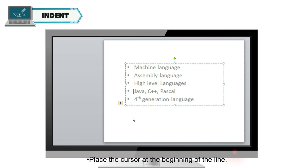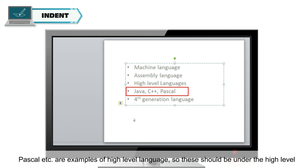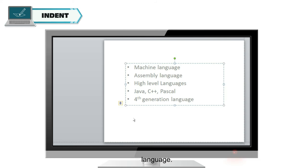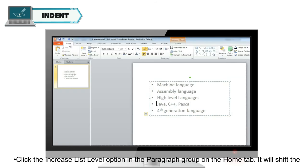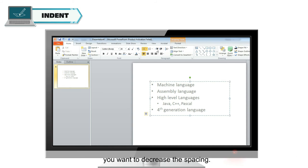Place the cursor at the beginning of the line. In this example, the list contains different types of computer languages — Java, C++, Pascal, etc. are examples of high-level language, so these should be placed under the high-level language. Click the Increase List Level option in the Paragraph group on the Home tab — it will shift the content to the right side. You can also decrease the indent using the Decrease List Level option if you want to decrease the spacing.